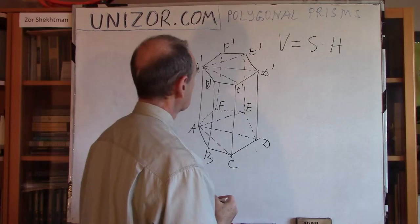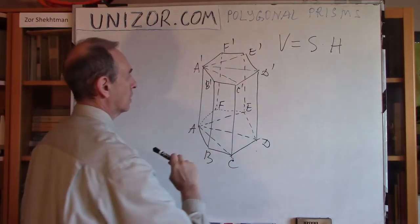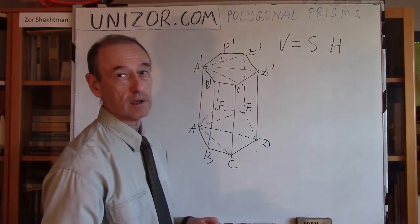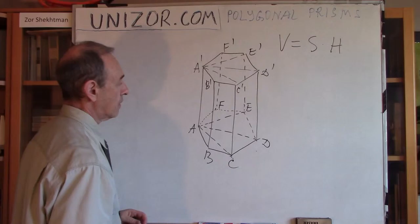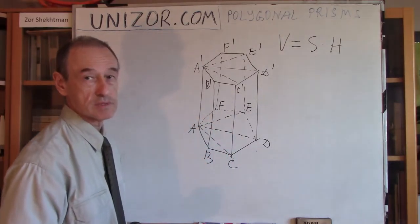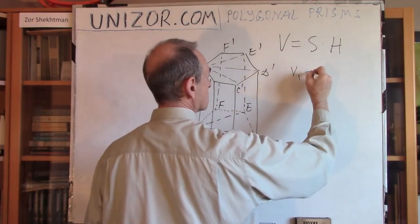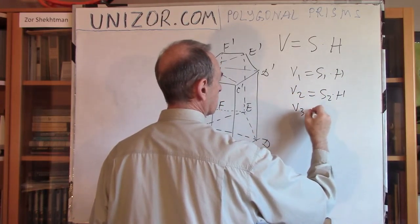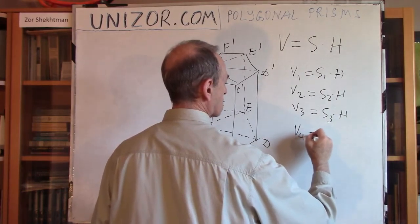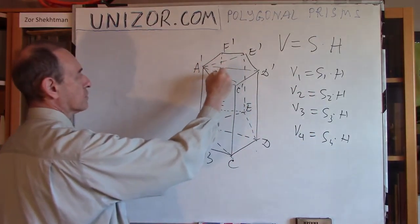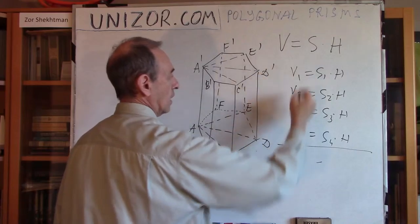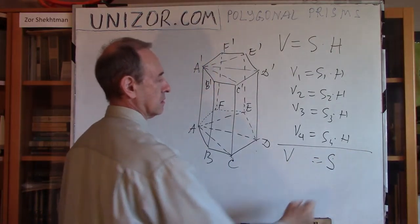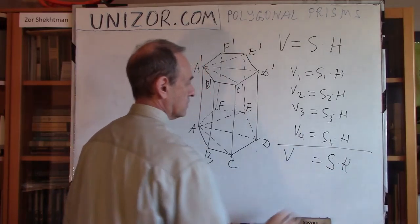Obviously, they all have the same altitude. The volume of the entire hexagonal prism is equal to the sum of these four triangular ones, and the area of the hexagon is equal to the sum of the areas of these bases. So basically, V1 = S1·H, V2 = S2·H, V3 = S3·H, and V4 = S4·H, where 1, 2, 3, 4 are the four triangular prisms. If I add them up, I get the total volume, and I can factor out H to get the total base area times H. So the formula is still the same.